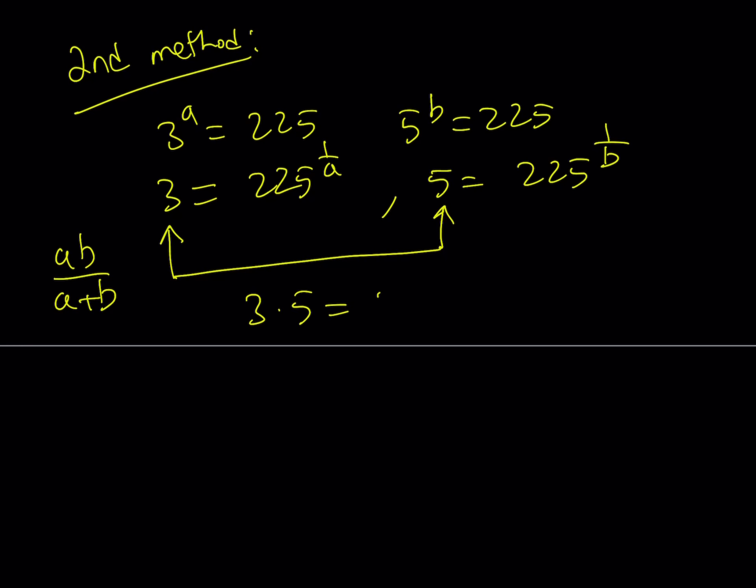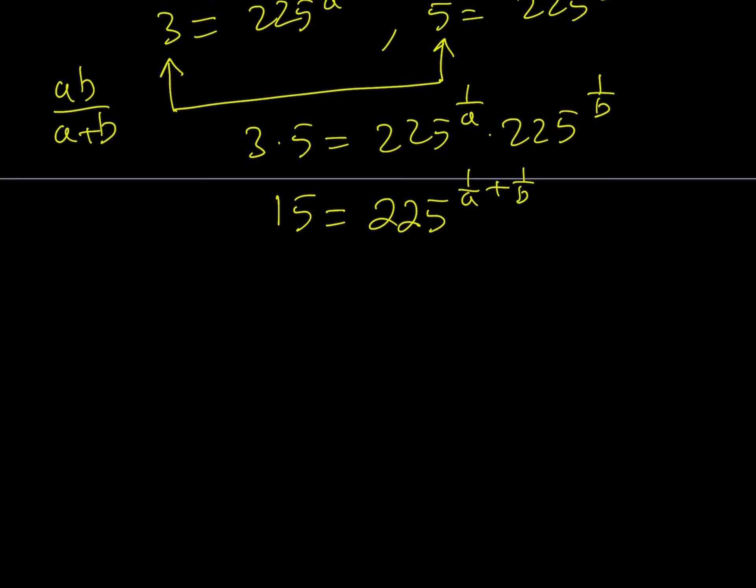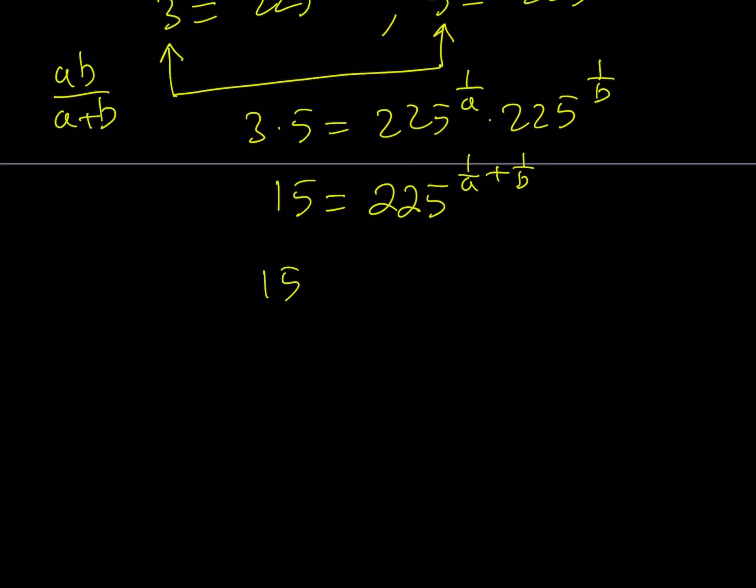3 times 5, and on the right-hand side we get 225 to the power 1 over a and 225 to the power 1 over b. 3 times 5 is equal to 15, and on the right-hand side, when you multiply powers with the same base, what do you do? You add the exponents, right? And this gives us something nice. If you make a common denominator, you get a plus b over ab.